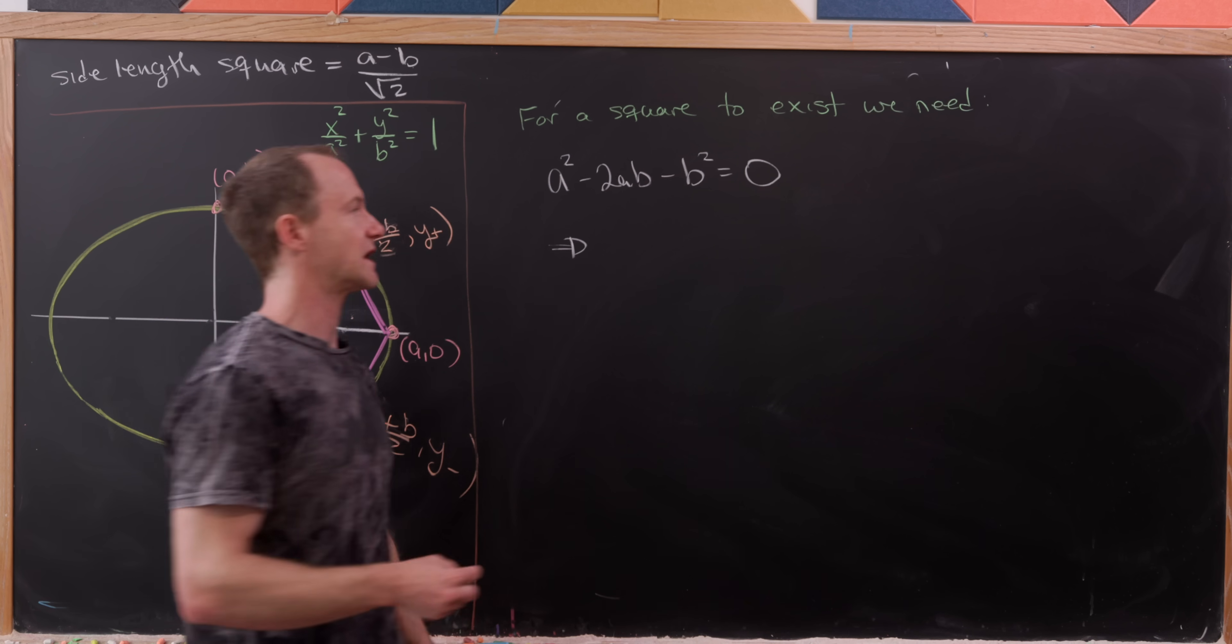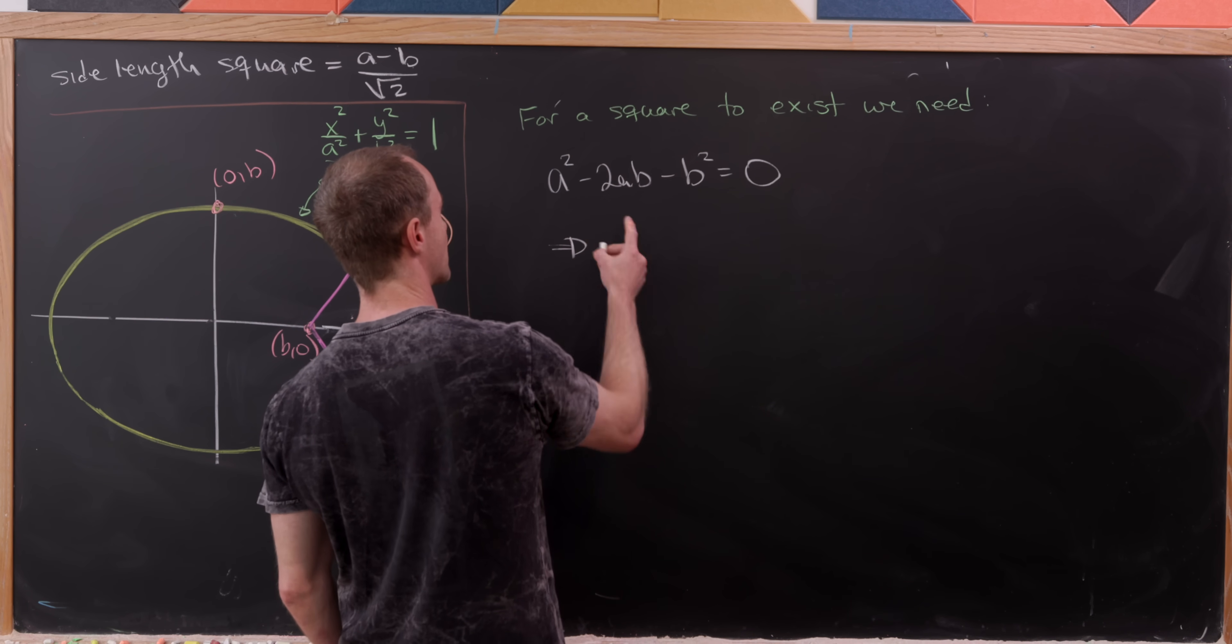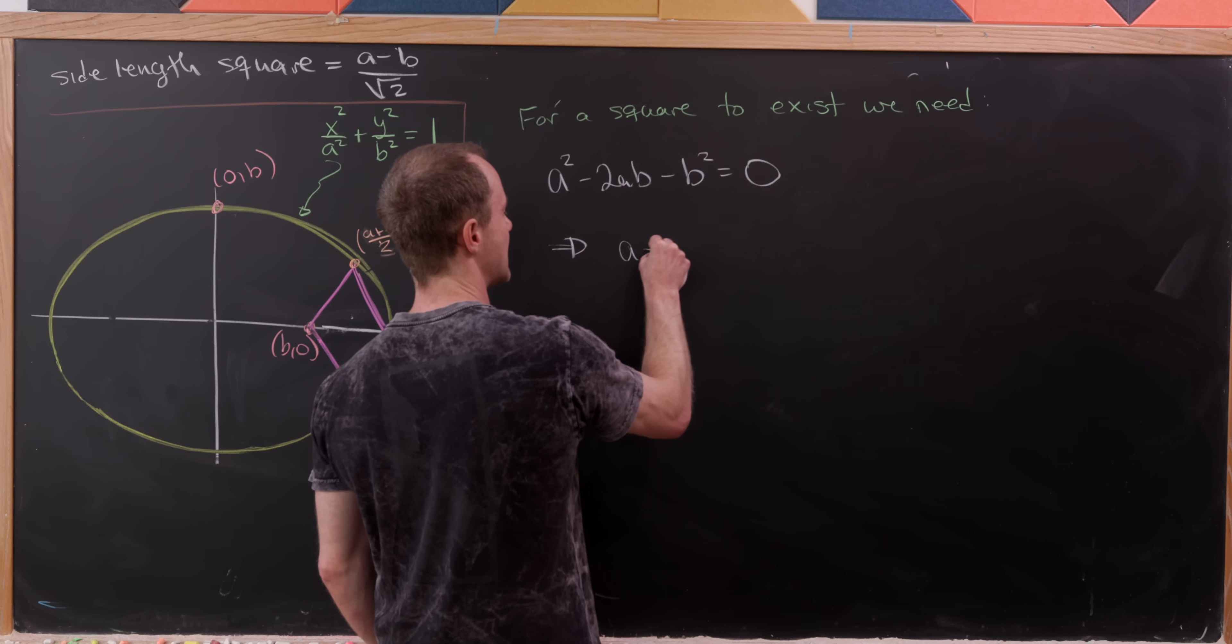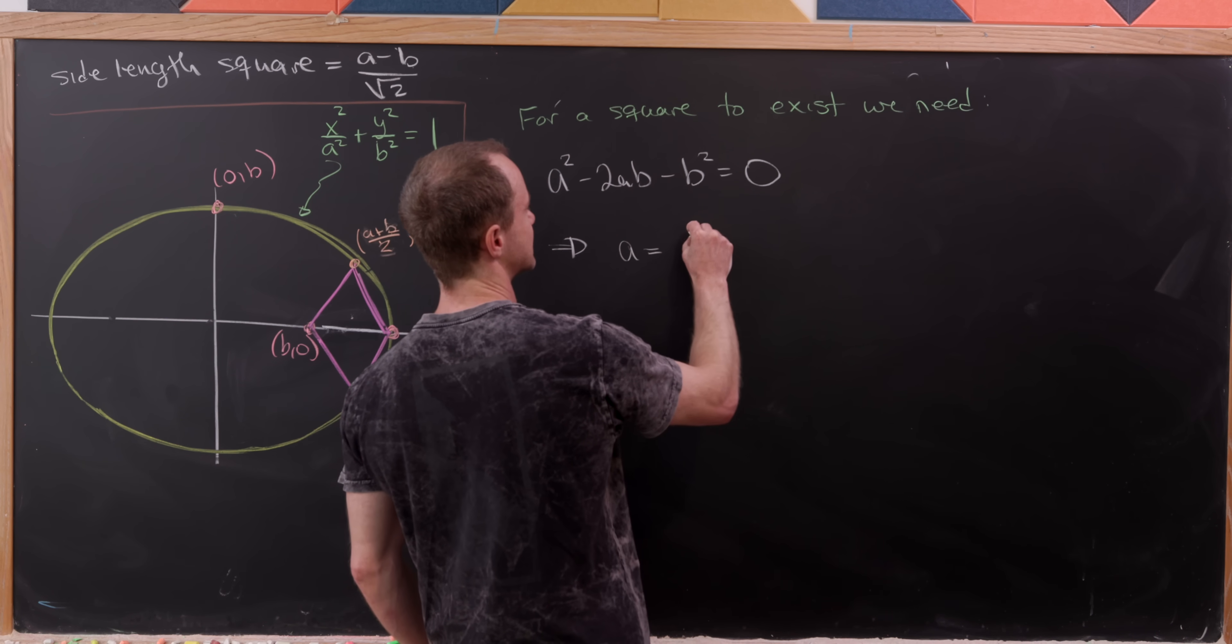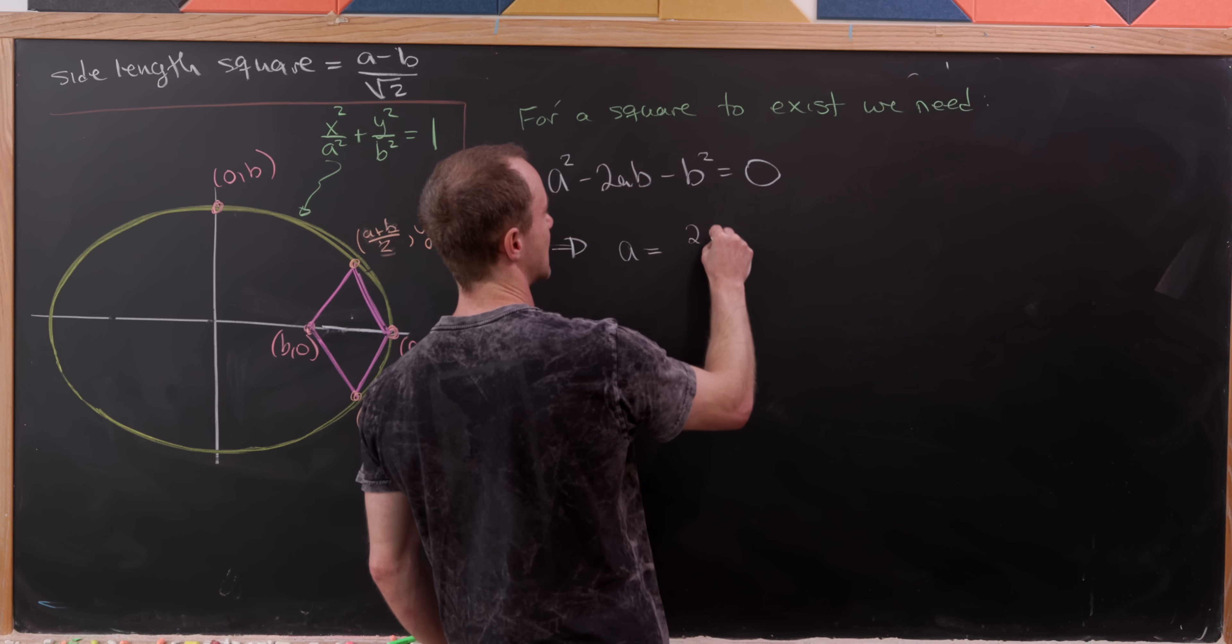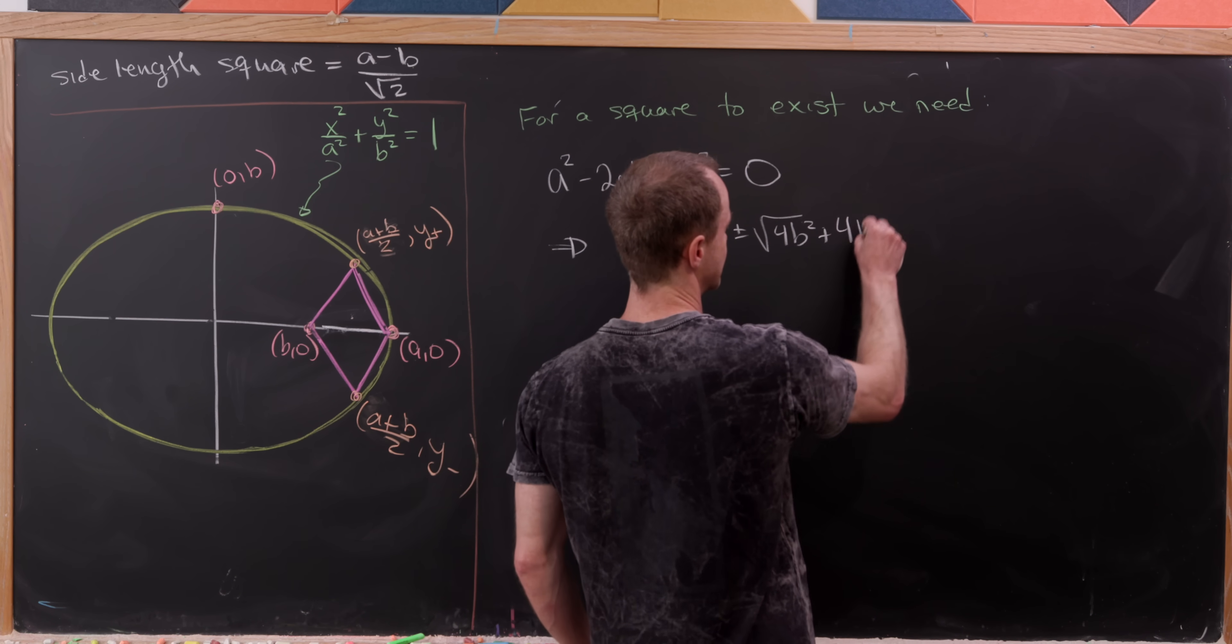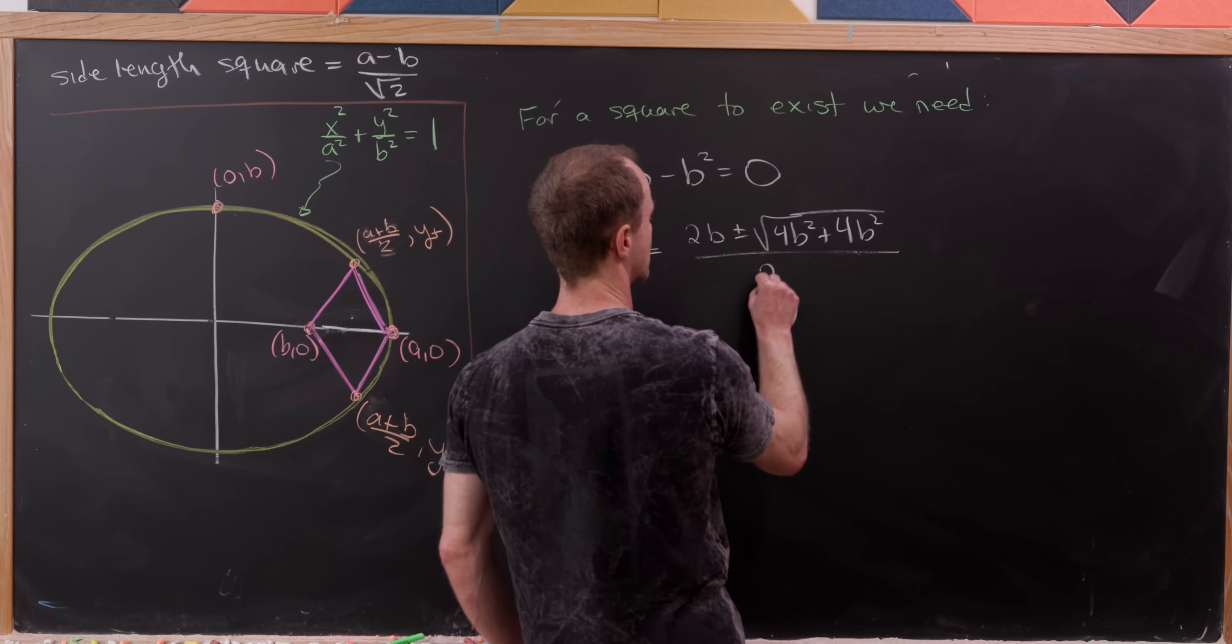And what will we get? Well, maybe we'll use the quadratic formula where a is the variable. So here we'll have a = (2b ± √(4b² + 4b²))/2.